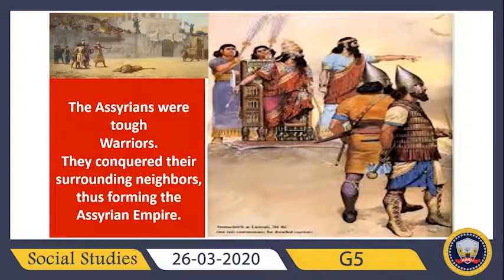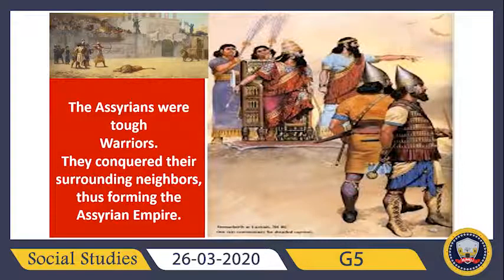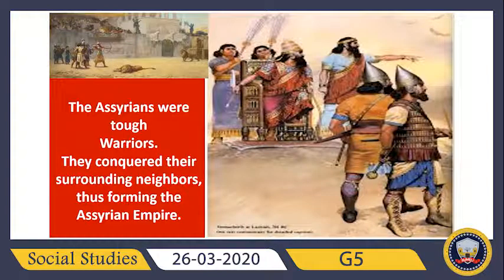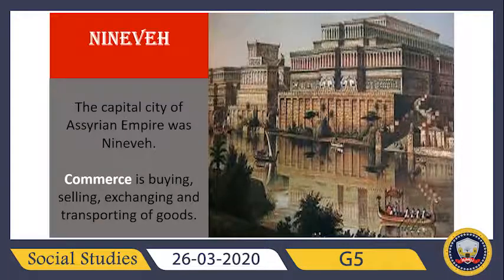Now let's talk about what kind of people the Assyrians were. Since the Assyrians were located in the middle of the Fertile Crescent, many groups attempted to control them. But the Assyrians were very tough warriors — they knew how to make iron weapons and were very strong people. Not only did they protect themselves against invaders, they were also able to conquer their surrounding neighbors. They started invading other surrounding neighbors, and with the passage of time they became a strong Assyrian Empire.